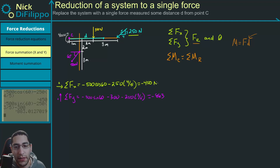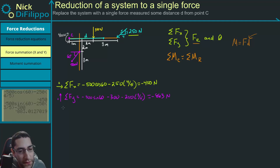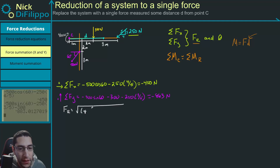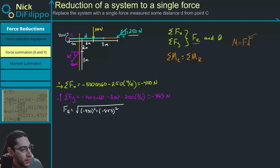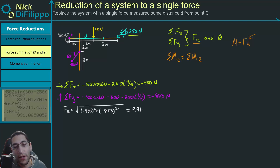Both of these are in newtons. So we can figure out our resultant force, which is going to be the square root of 450 squared plus 883 squared. Taking the square root, we get this is equal to 991 newtons. So this is our resultant force.